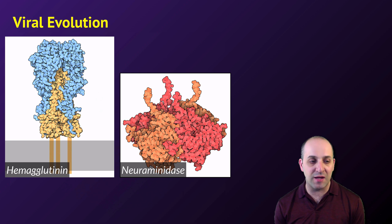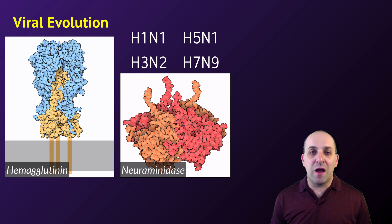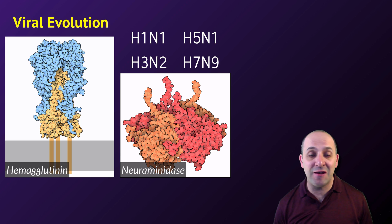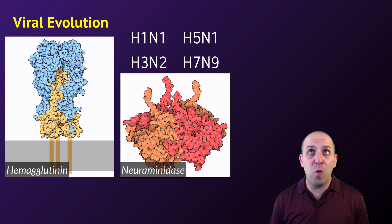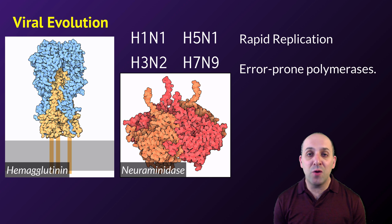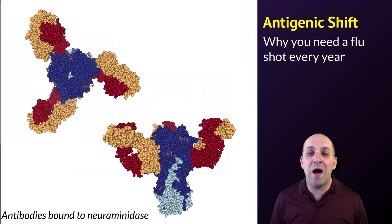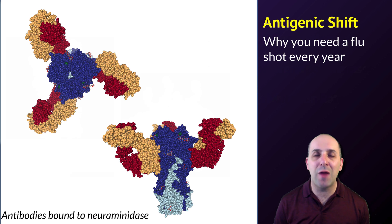Viruses also evolve extremely quickly. The influenza virus has two surface proteins — hemagglutinin and neuraminidase — used during its life cycle. We classify flu strains based on these proteins; designations like H1N1 or H7N9 refer to the type of hemagglutinin and neuraminidase. There's a wide variety of these proteins because viruses reproduce very rapidly, and the polymerases they use are prone to much higher error rates during replication than cellular polymerases, resulting in very high mutation rates.